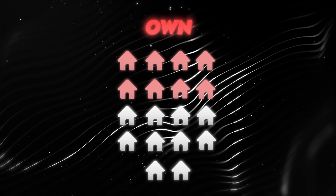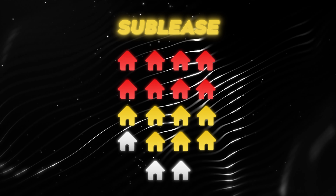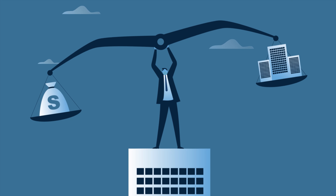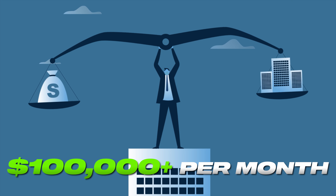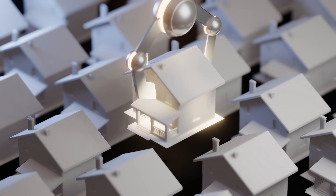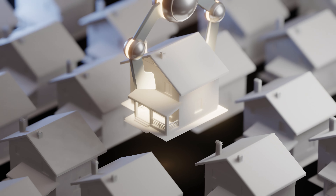For those of you that are new to my channel, my name is Jorge Contreras. I've been a real estate investor since 2012, and I got into the short-term rental business in 2017. Today I have 18 short-term rentals that I own, sublease, and manage. My company does over six figures a month. I also have an Airbnb Academy where I teach you how to acquire, launch, and automate Airbnbs with or without owning property. Check out all the links down below.